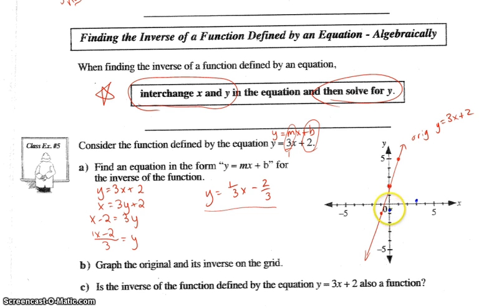Okay, and we could do the same thing, go down 1, and over the other way, 1, 2, 3, so somewhere in there. So we should have something like this for the inverse. Okay, which is y equals 1 third x minus 2 thirds.